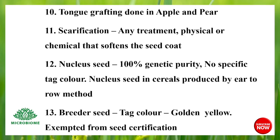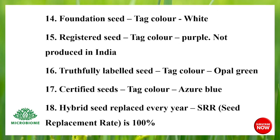Breeder seed has a golden yellow tag color and is exempted from seed certification. Foundation seed has a white tag color. Registered seed has a purple tag color and is not produced in India. Truthfully labeled seed has an opal green tag color. Certified seed has an azure blue tag color.